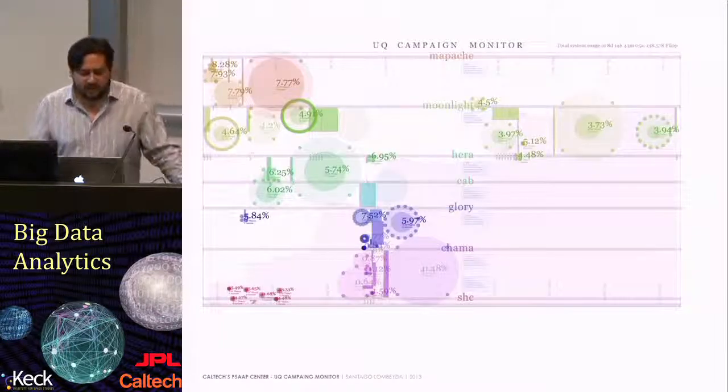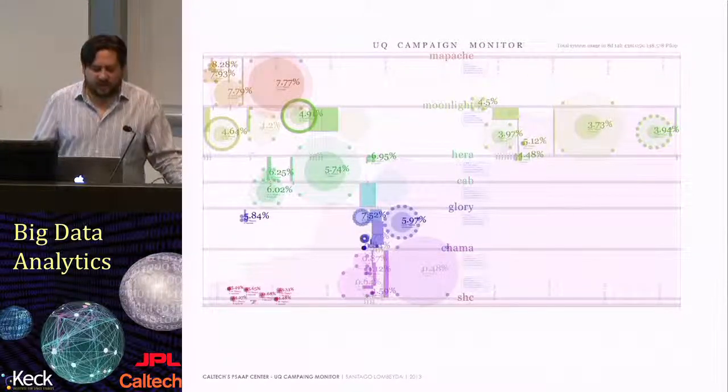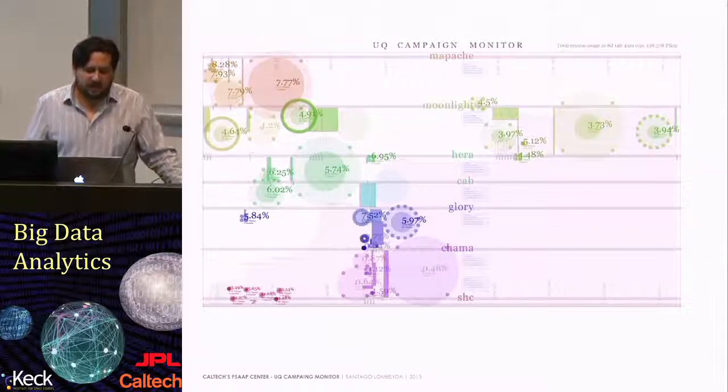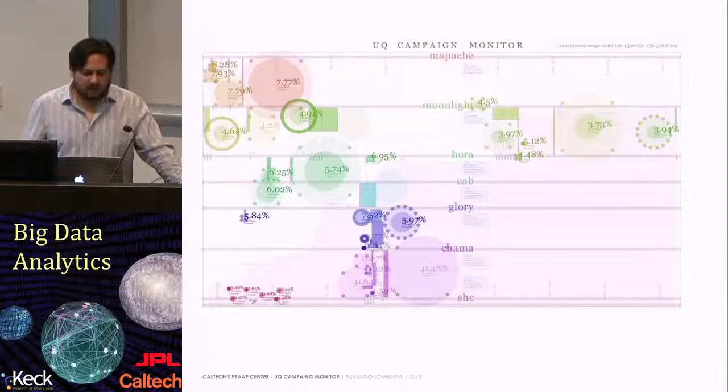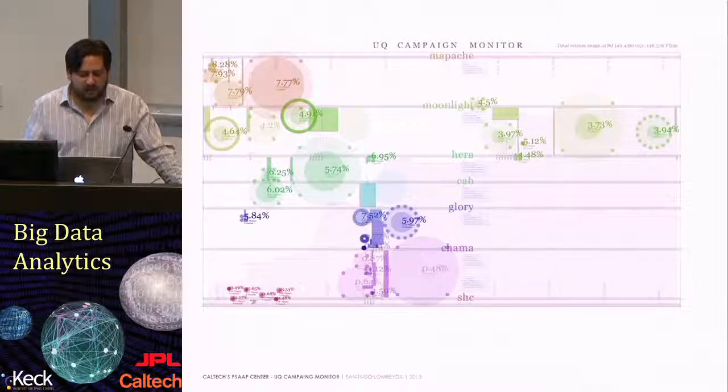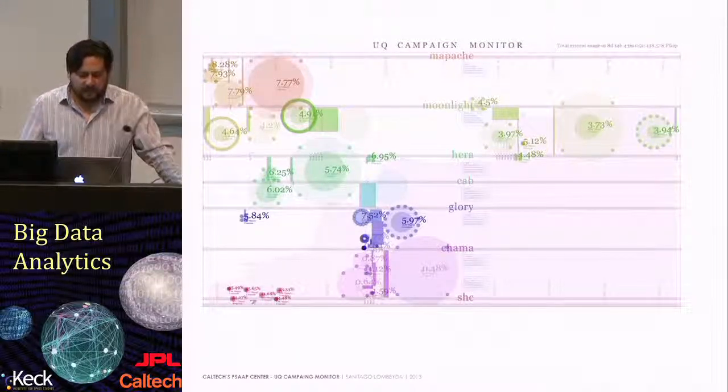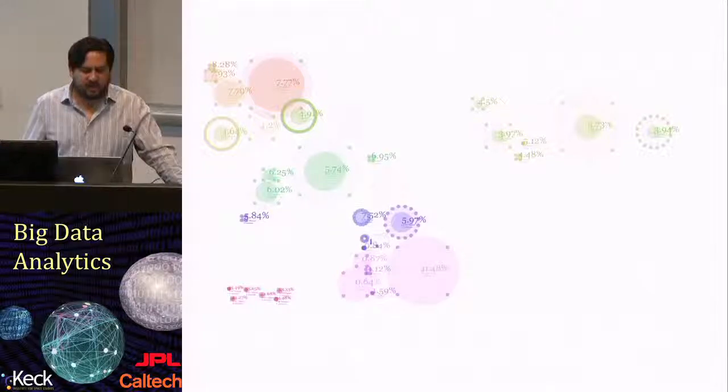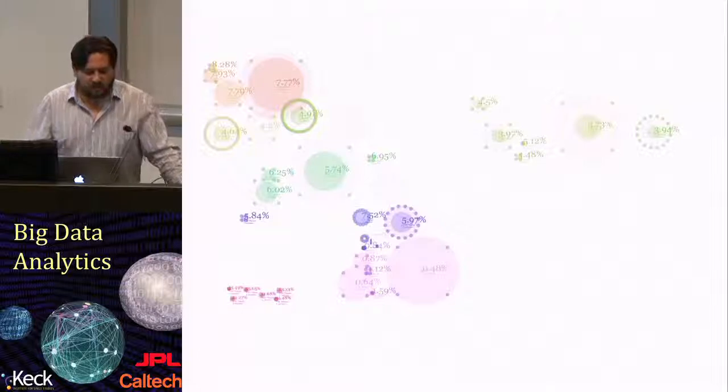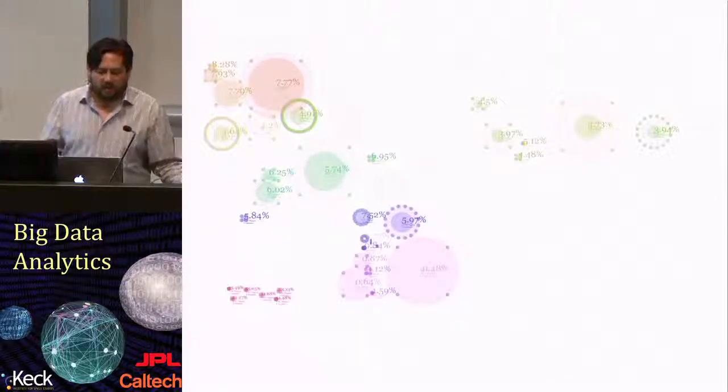Here is a different representation that we did here at Caltech as part of the PSAP project in which we're actually showing a campaign of different computations done across six different machines in the national labs. Now we launched computations that were actually linked to each other and we wanted to see how efficient we were with each computations. So here we isolate each of the jobs in our representation that actually show how many cores we used in each of these jobs, how big was the job and then how efficient it was.